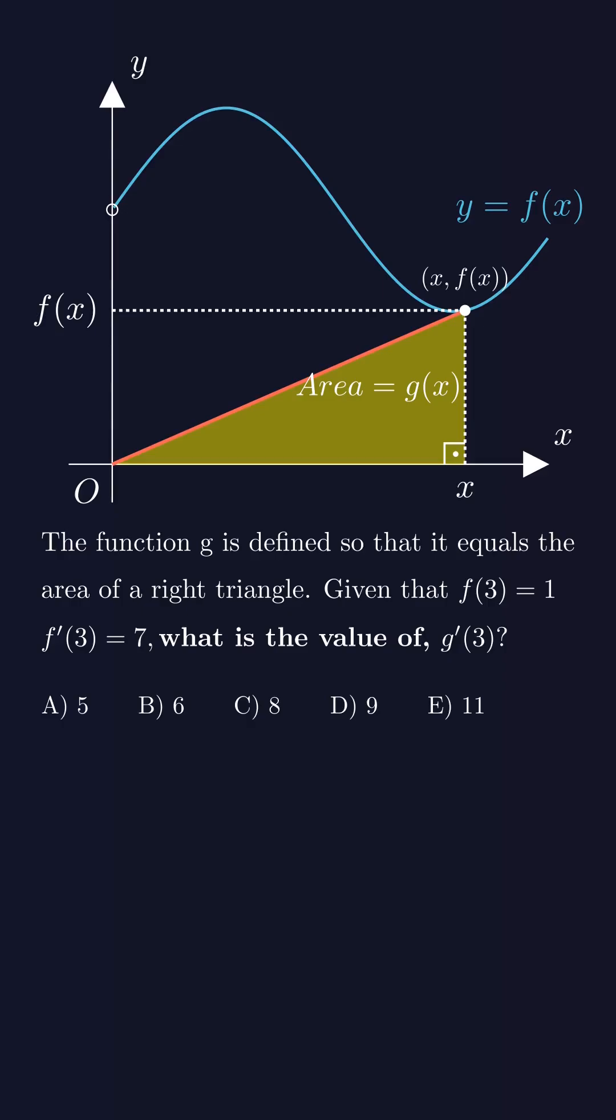Now the yellow triangle represents the function g, so let's find the area of that triangle. This side is x units, right? Then the other side would be f(x). Since g is defined as the area, we can write g(x) equals x times f(x) divided by 2.